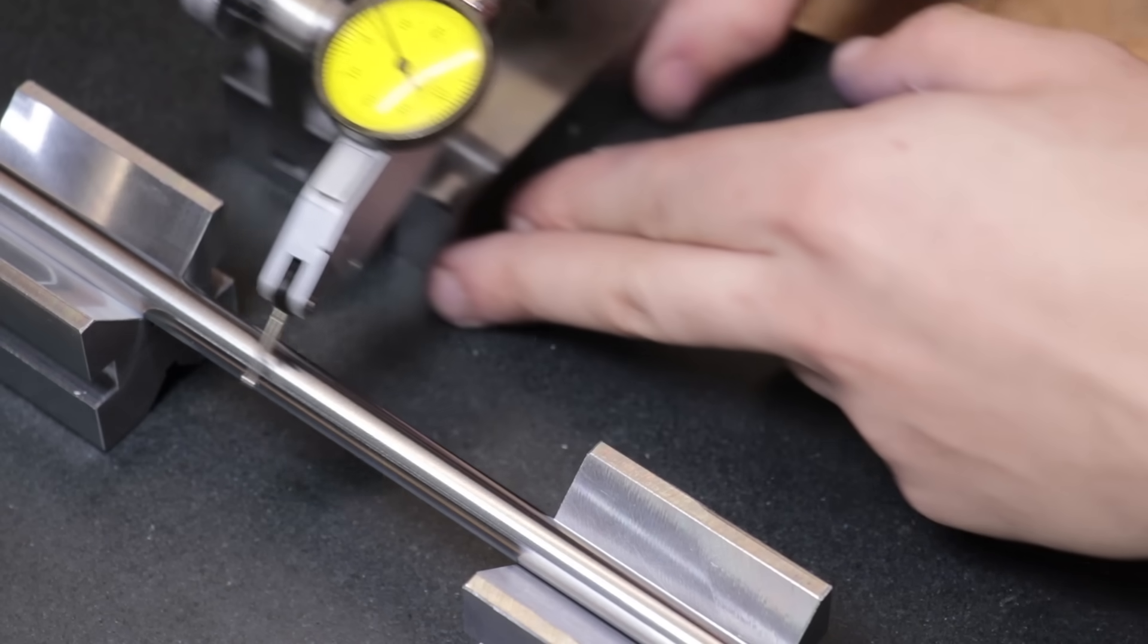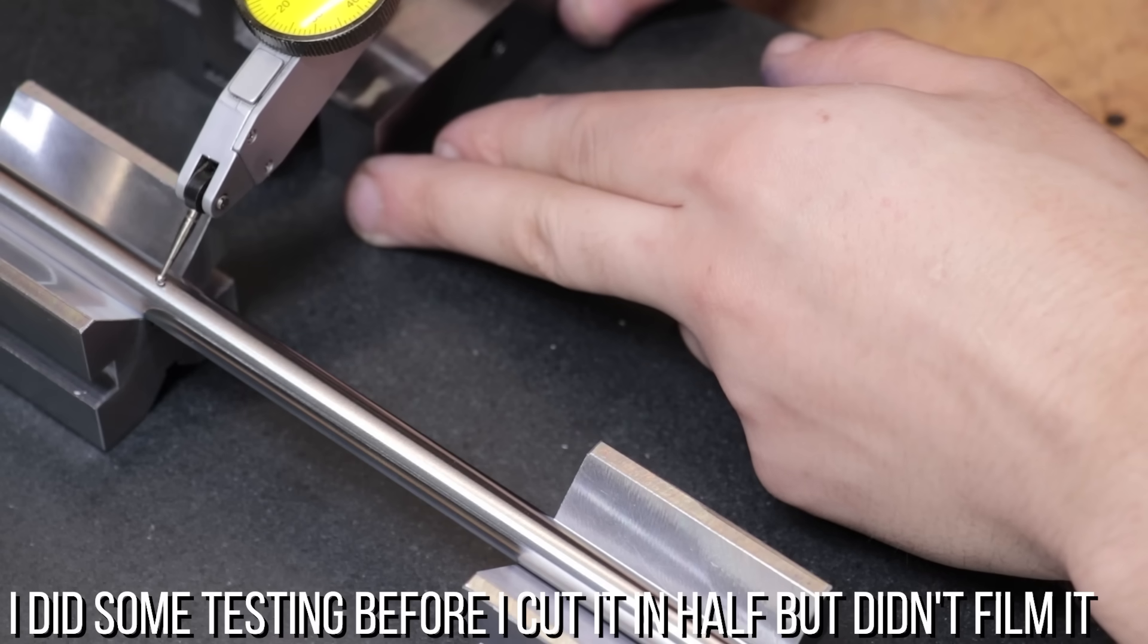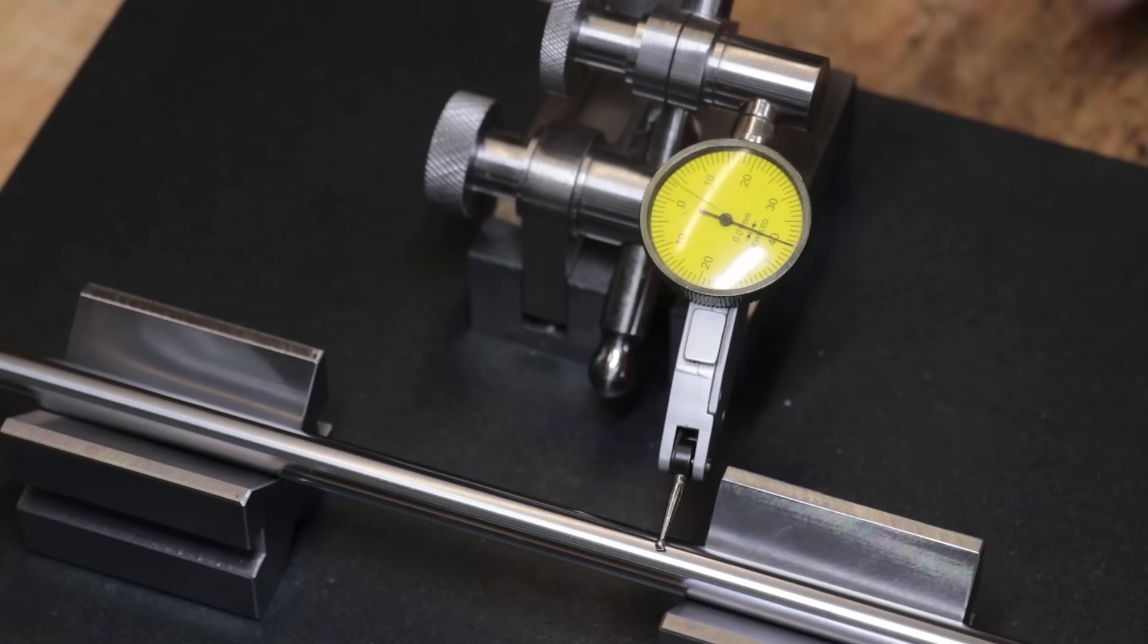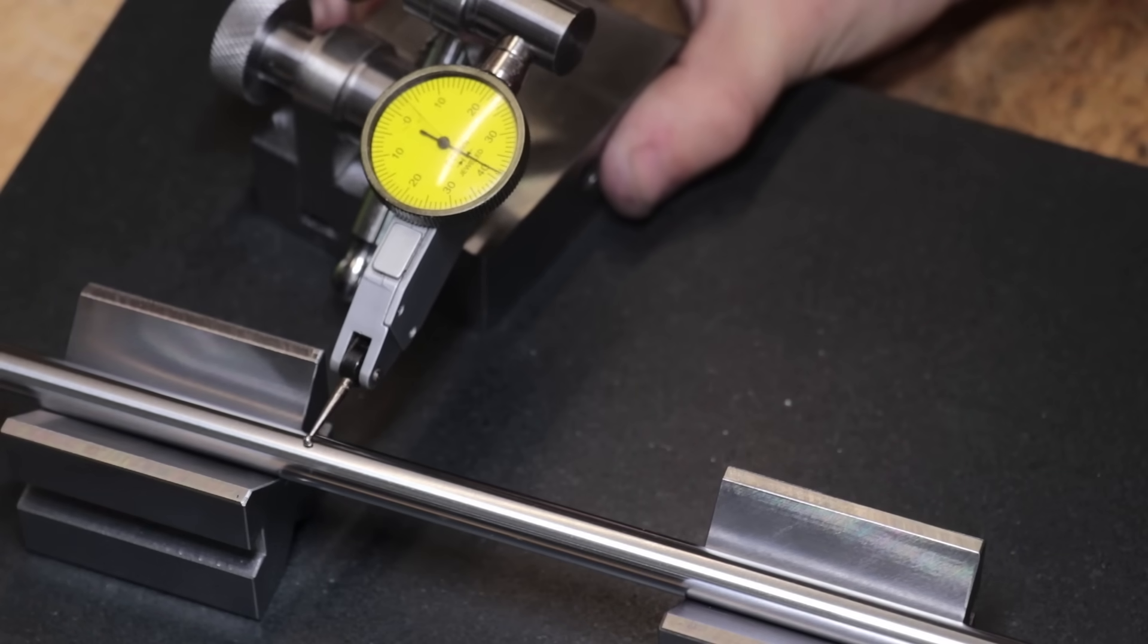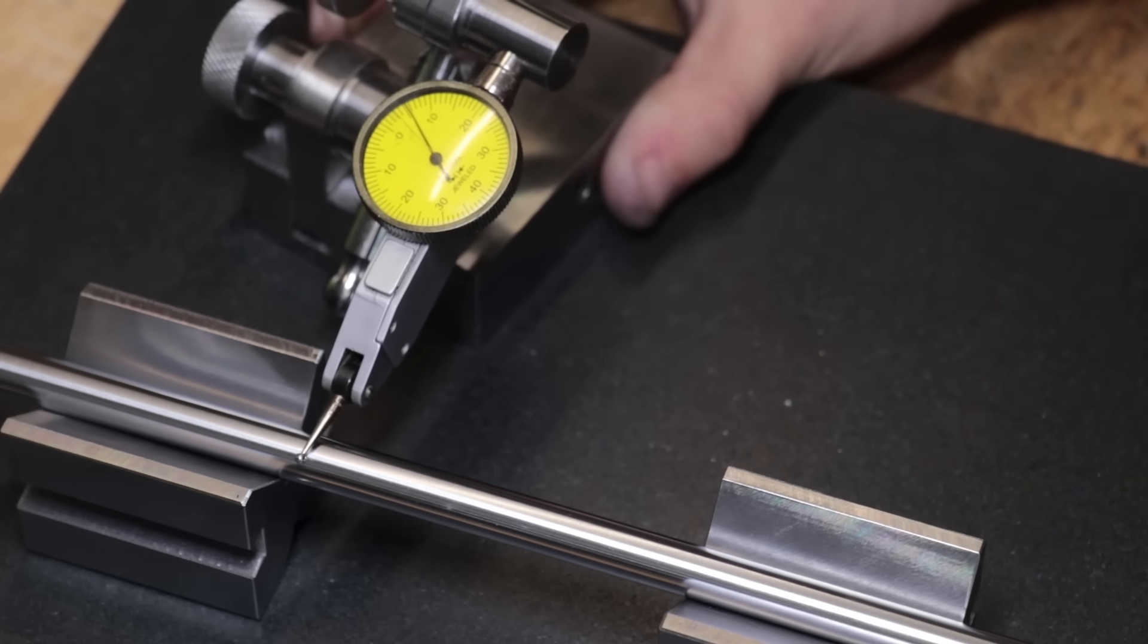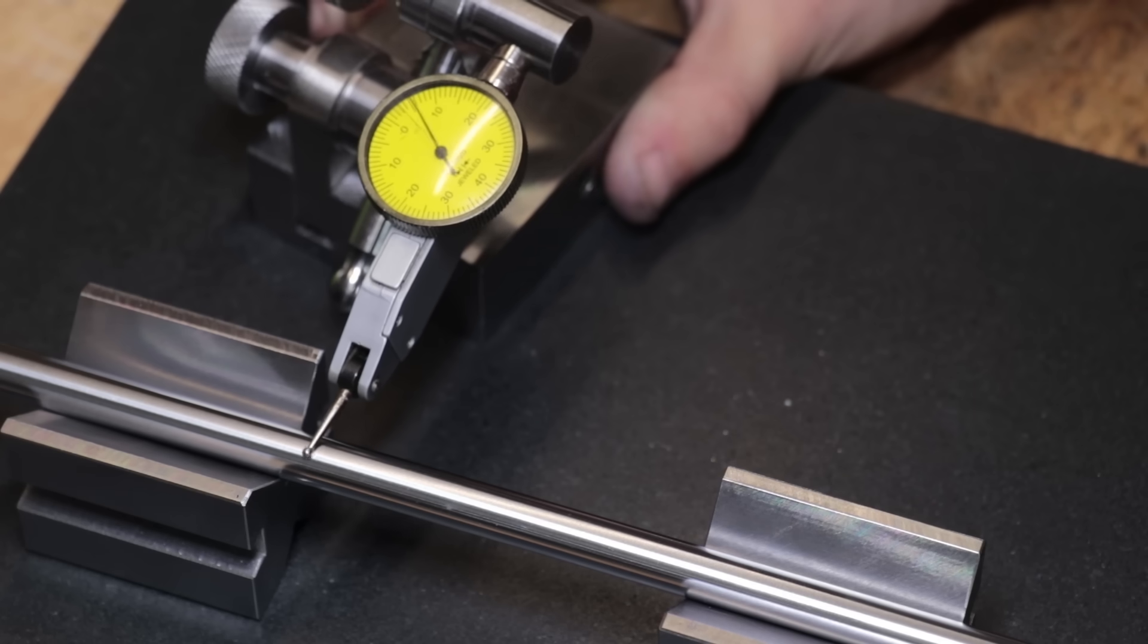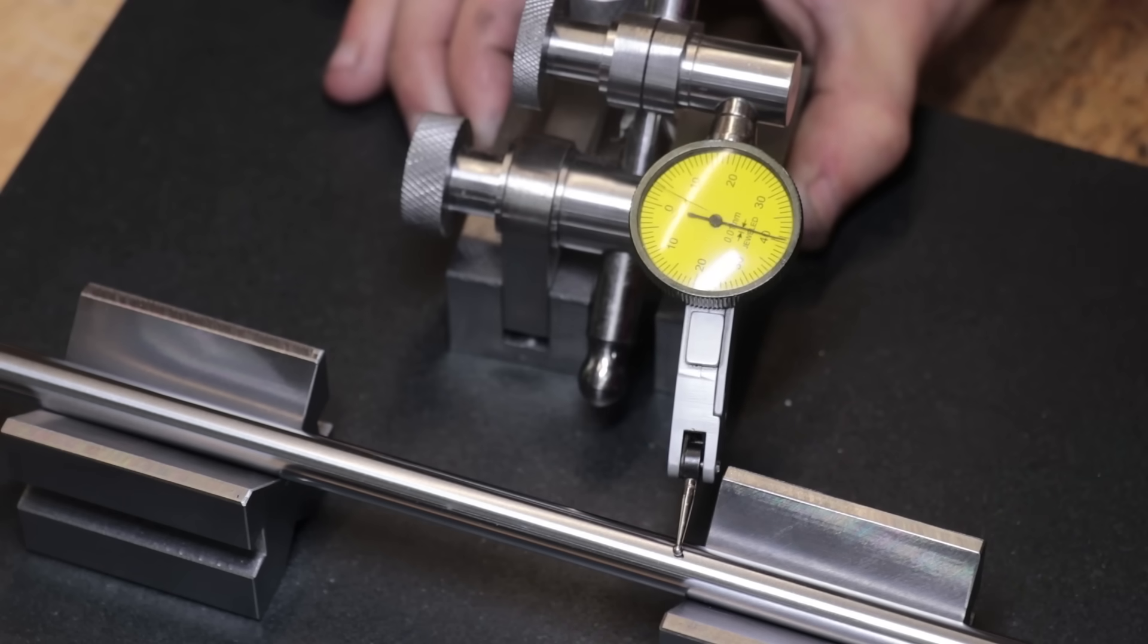Now before I harden them I am going to quickly test them on the surface plate just to make sure that they are perfectly machined and it should help us see how much they warp or distort during heat treatment. Now measuring between two points on a piece of ground rod shows us that these two points are equal in height or at least equal to within 0.01mm which is sort of what I'm aiming for. So let's move on to getting them hardened.